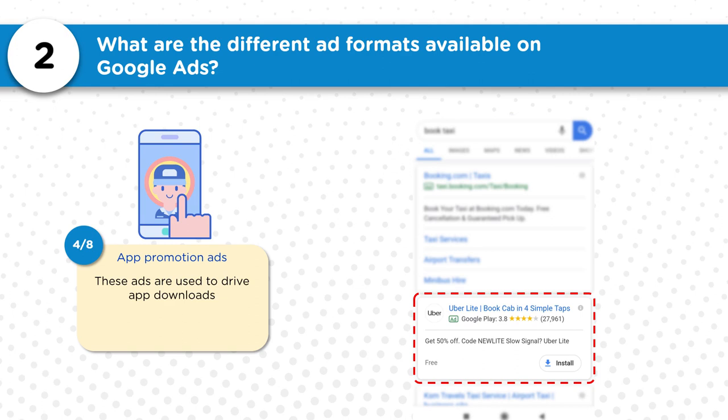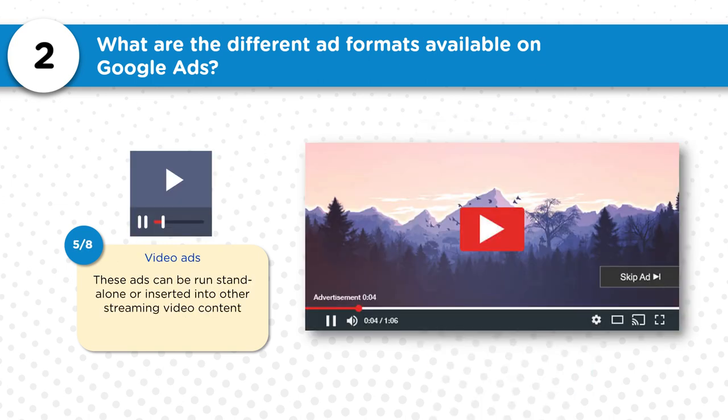There are also app promotion ads. These ads are used to drive app downloads, and you'll need to set up a campaign accordingly. You can see a call to action that allows users to click and install the app. If you have an app and want to promote it, you can use this ad format aligned with a campaign driving traffic to download your app.